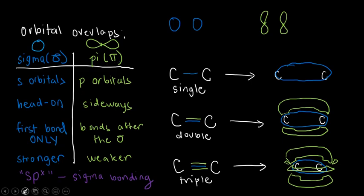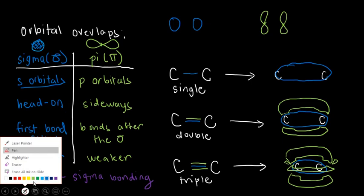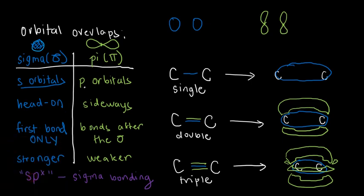S orbitals have a spherical shape, and P orbitals have a somewhat unusual shape — it looks like an infinity symbol if drawn two-dimensionally. Some call it a dumbbell shape, and that's the commonly used term.